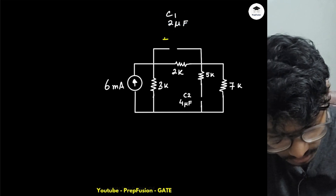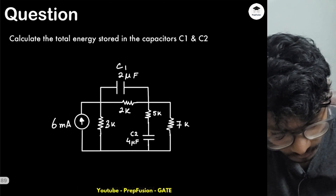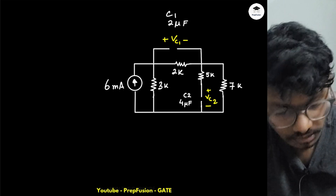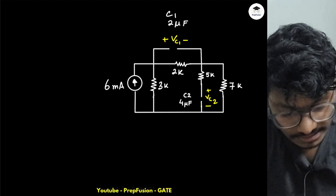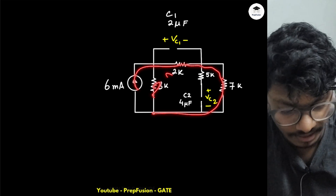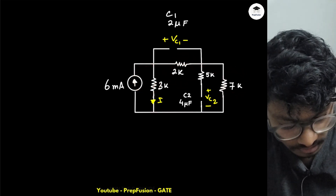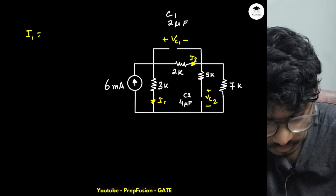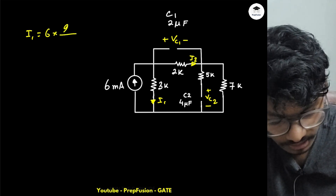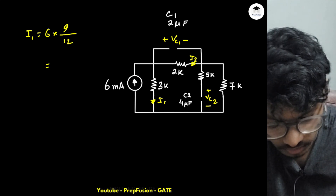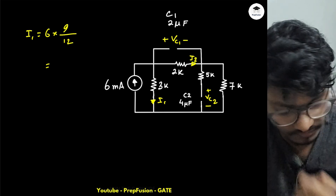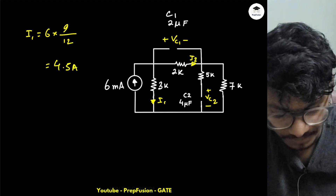Now I can find the currents. The two resistor branches are in parallel. Using CDR, I1 will be 6 × 9/12 = 4.5 mA, and I2 will be 1.5 mA.